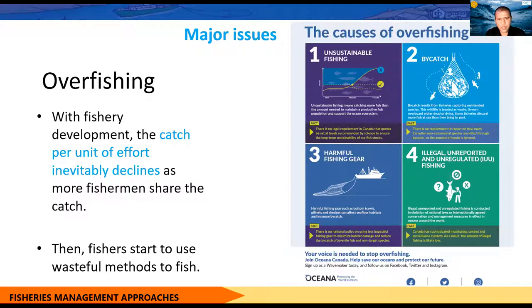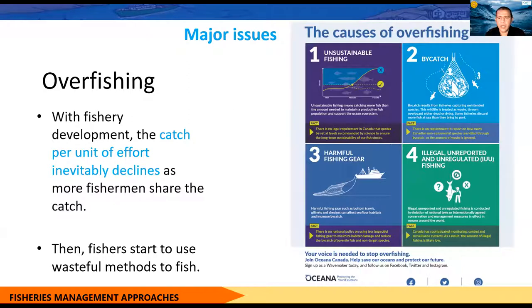As you can understand, the problem of fisheries is really more complex than you might think. There are so many things associated with fisheries and fisheries management. Overfishing is one of the key issues in the fisheries sector. The reasons for overfishing include unsustainable fishing methods, bycatch, harmful fishing gear, and IUU fishing. Because of that, the catch per unit effort declines — individual fishermen on individual boats get less and less income — making serious hardship for the fishermen.